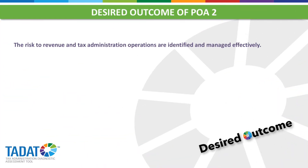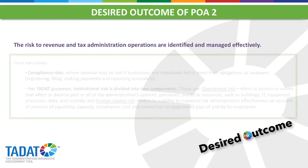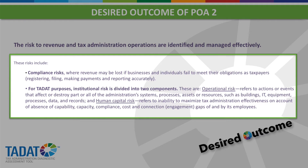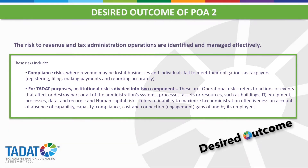In the following slide, let's look at what the desired outcome is for POA 2. We'll also examine the basis on which risk management is founded. The desired outcome of POA 2 is that the risk to revenue and tax administration operations are identified and managed effectively. As you know, tax administrations face numerous compliance and institutional risks that could adversely affect revenue and tax operations. Managing compliance and institutional risk that affect the entire organization requires a wide range of structured approaches that are an integral part of multi-year strategic and annual operational planning. It implies both identifying risk and finding and mitigating measures to address them.